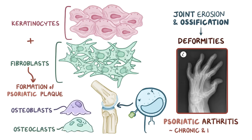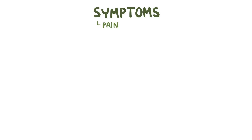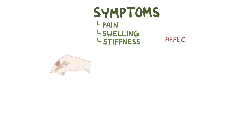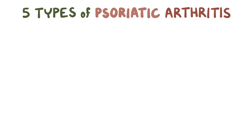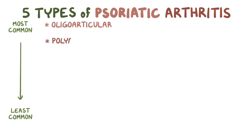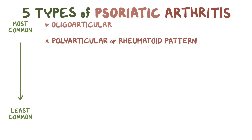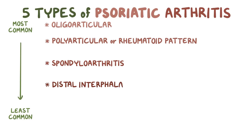Psoriatic arthritis is chronic and progressive, meaning it typically worsens over time. Symptoms include pain, swelling, and stiffness in the affected joints. Since psoriatic arthritis is inflammatory, these joints are generally red and warm to the touch. Different joints can be affected, and there are five different types of psoriatic arthritis. In order from most to least common, these are: oligoarticular, polyarticular or rheumatoid pattern, spondyloarthritis, distal interphalangeal predominant, and arthritis mutilans.